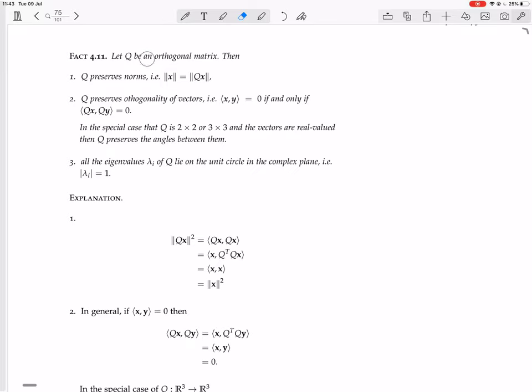So let Q be an orthogonal matrix. Remember, that's a matrix where Q inverse is equal to Q transpose. Or alternatively, Q transpose times Q equals I, which is the same as Q times Q transpose.